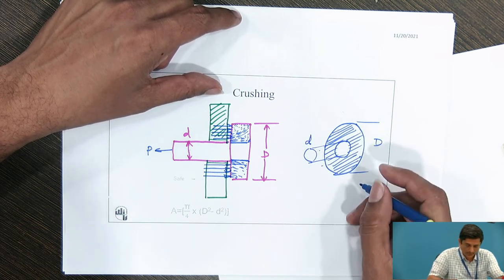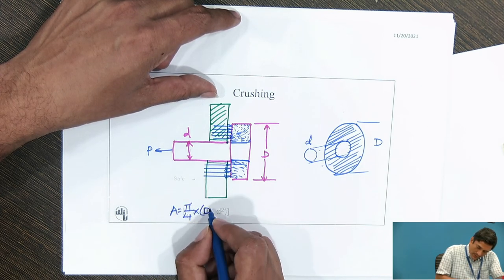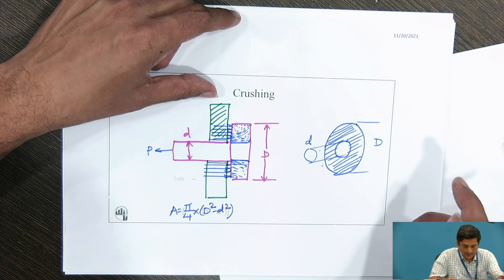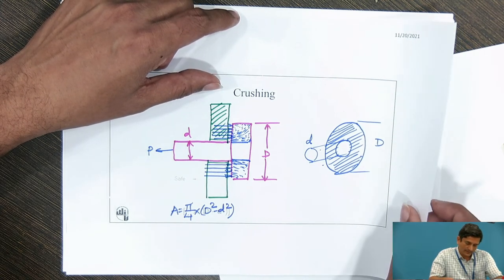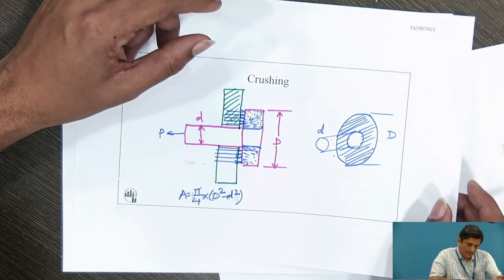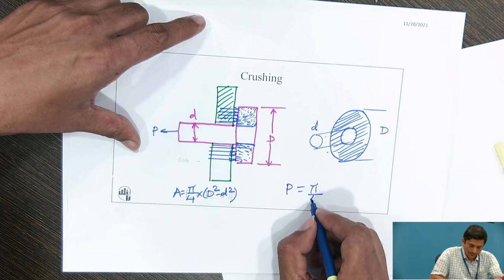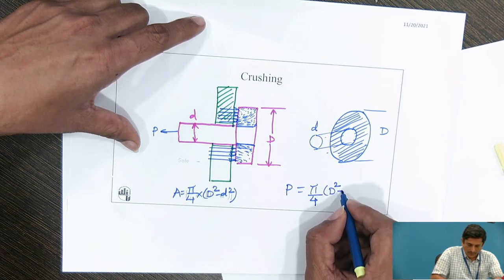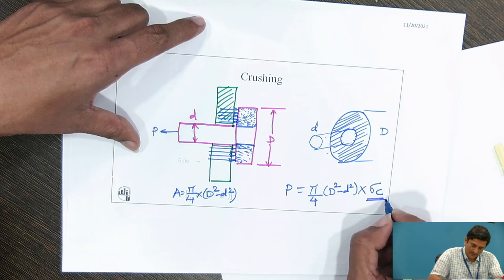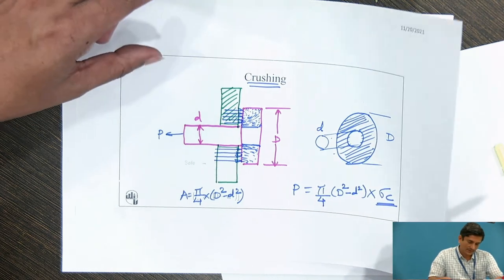This outer diameter is capital D. Pin head diameter. This diameter is small d. This zone only is under compression. Therefore, if I want to find out the net area under compression, it is pi by 4 into D square minus d square. Then the equation will be force P equals pi by 4 D square minus d square multiplied by sigma c, the compressive stress or the crushing. This is a typical case of crushing failure.